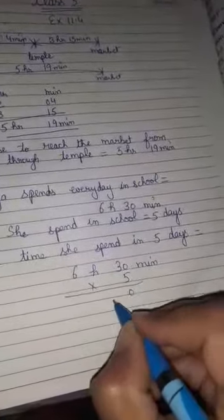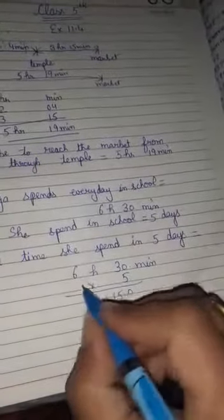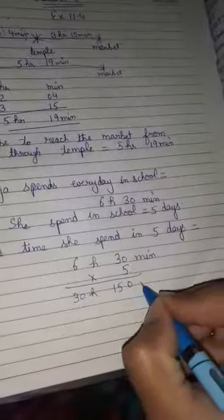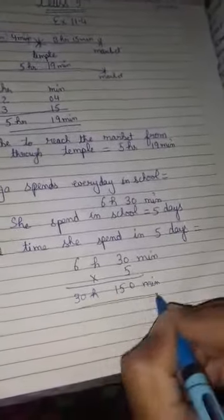5 threes are 15, 5 sixes are 30. So 30 hours, 150 minutes.